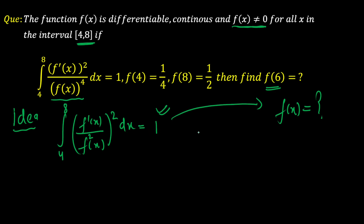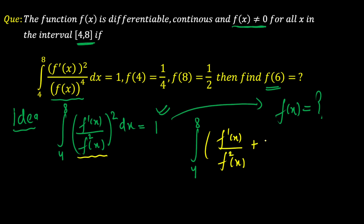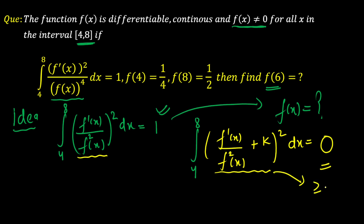The basic idea is to consider the modified integral from 4 to 8 of [f'(x)/f(x)² + k]² dx, taking the whole square of that expression with a constant k inside. The key insight is: if this integral turns out to be 0, then since the integrand is a perfect square — always ≥ 0, always above the x-axis — its integral being 0 forces the integrand itself to be 0.